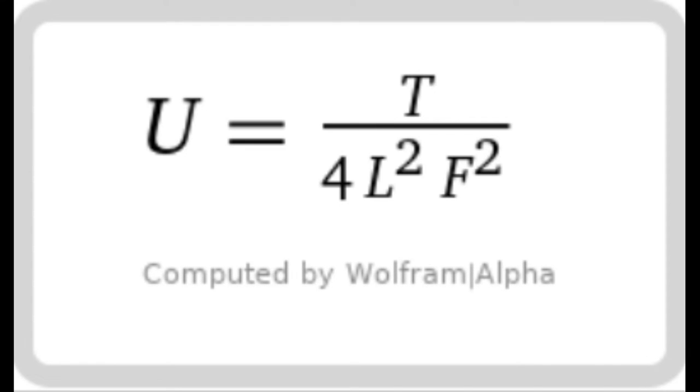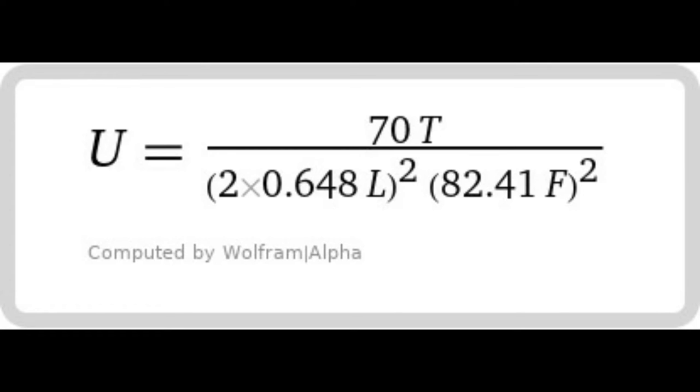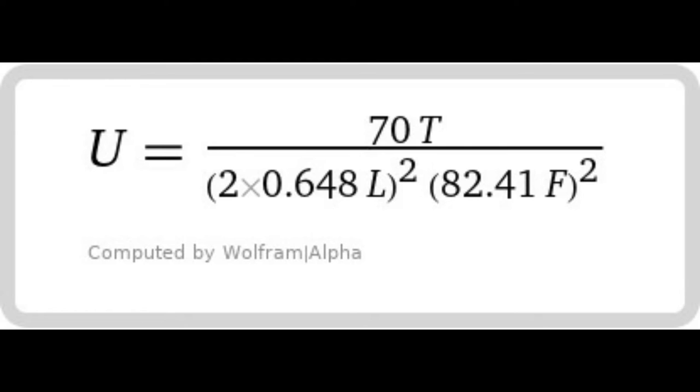So, if we enter our chosen variables for the low E string, we have 82.41 Hz, 0.648 m, and 70 newtons. The result of this is a linear density of roughly 0.00614 kg per unit length.